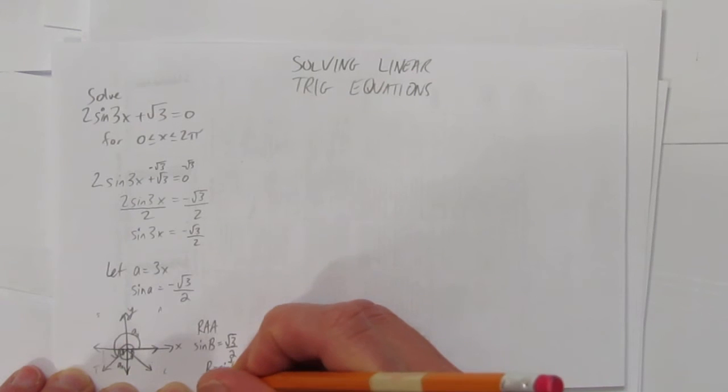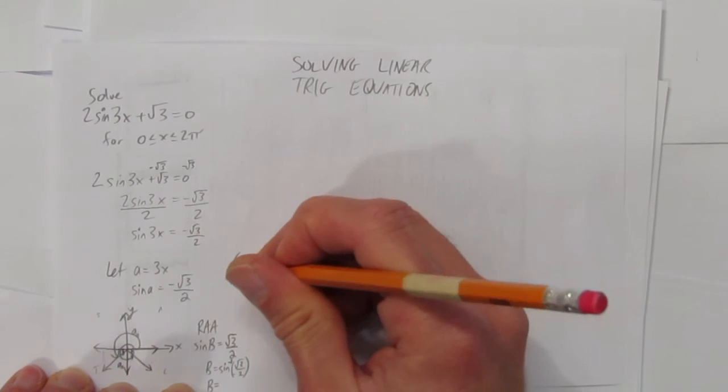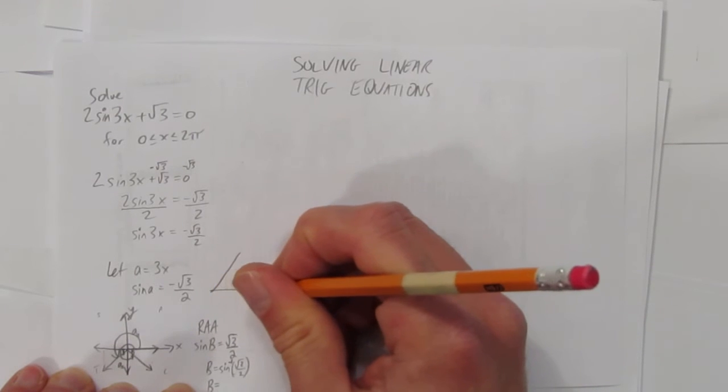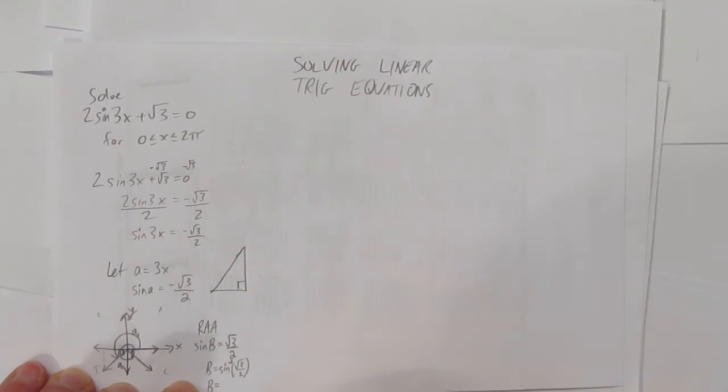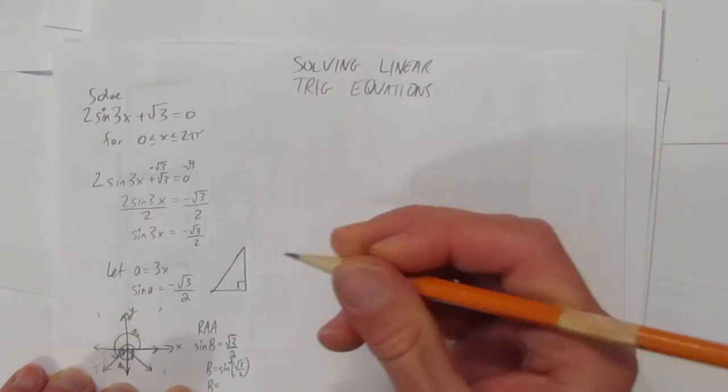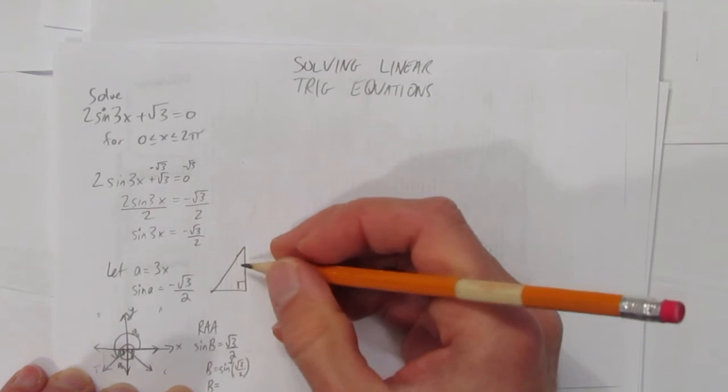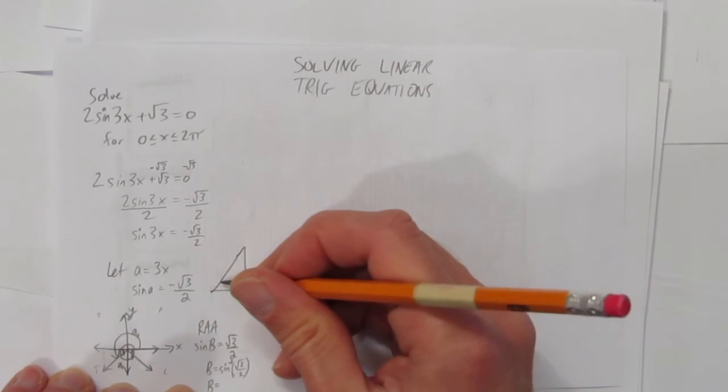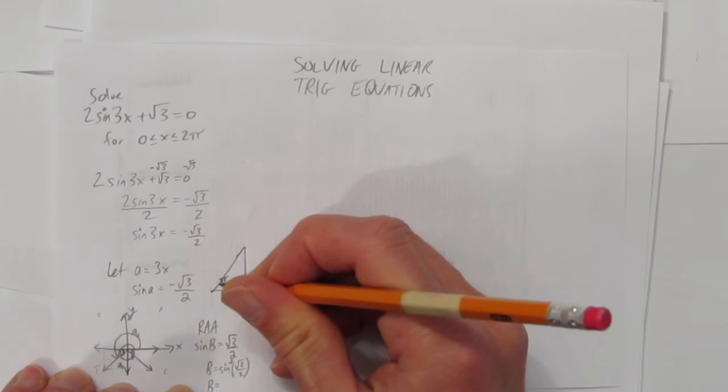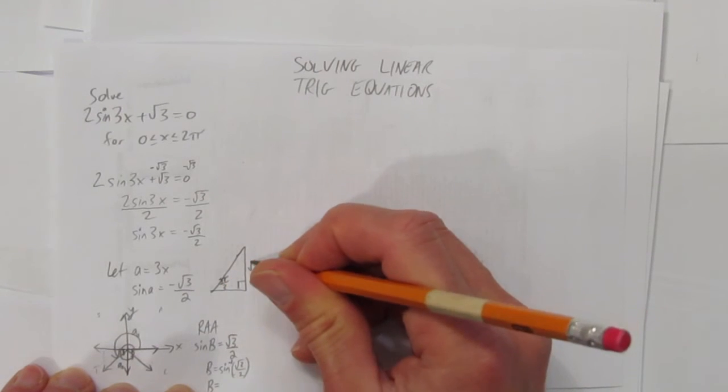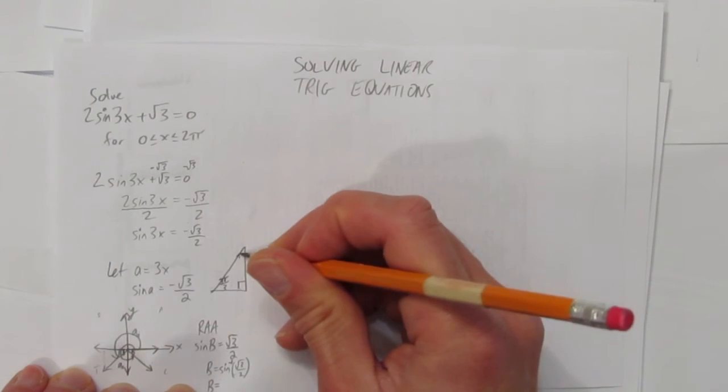You could solve that on a calculator, but I'd rather do exact values. I can get exact values by drawing this special triangle that contains sides √3 and sides 2. I kind of need to know that special triangle off by heart. I know that this side is the bigger angle, that's π/3, and it matches the bigger side.